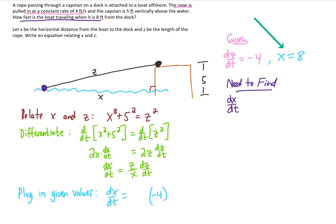And the only question we have left is what is our value of z at this instant that we're trying to find dx/dt? In other words, we're asking the question, what is z when x equals 8? We can figure that out by just using this formula that we came up with earlier in the problem.